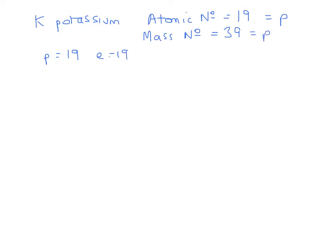The mass number is the number of protons added to the number of neutrons. Therefore, if we know the number of protons is 19, the number of neutrons will be 39 minus 19, which is 20.